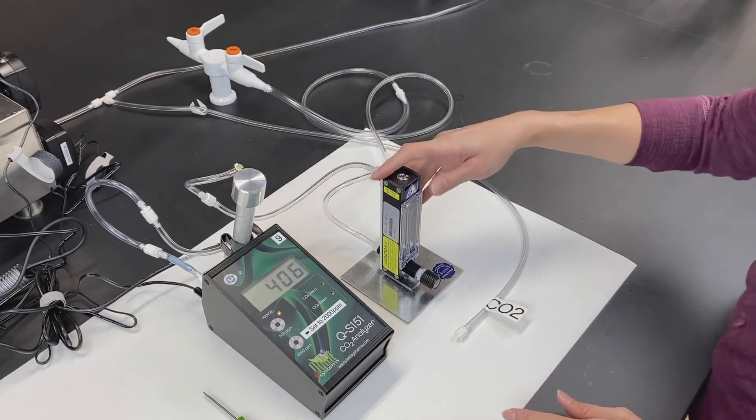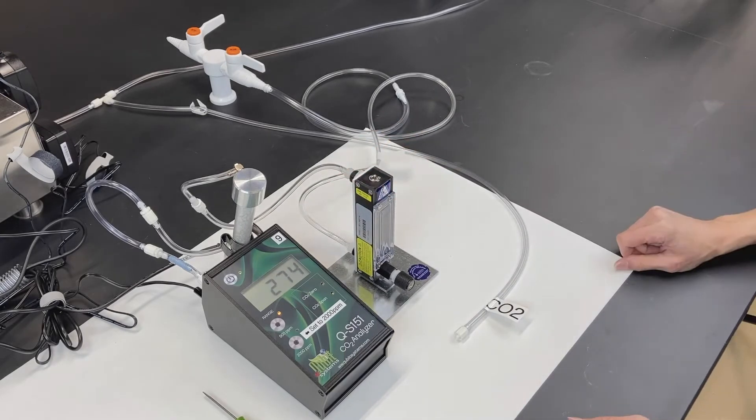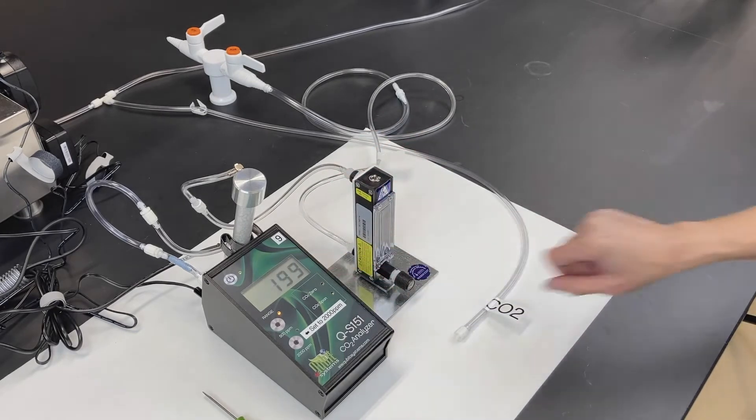Turn on the air and make sure the flow rate is set to 600 milliliters per minute. You should see the carbon dioxide levels decrease.